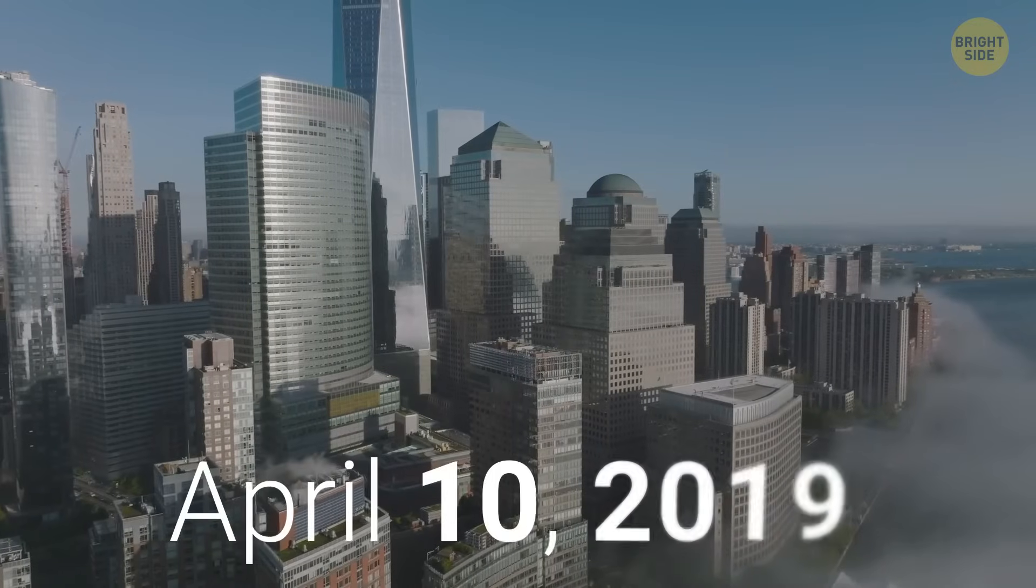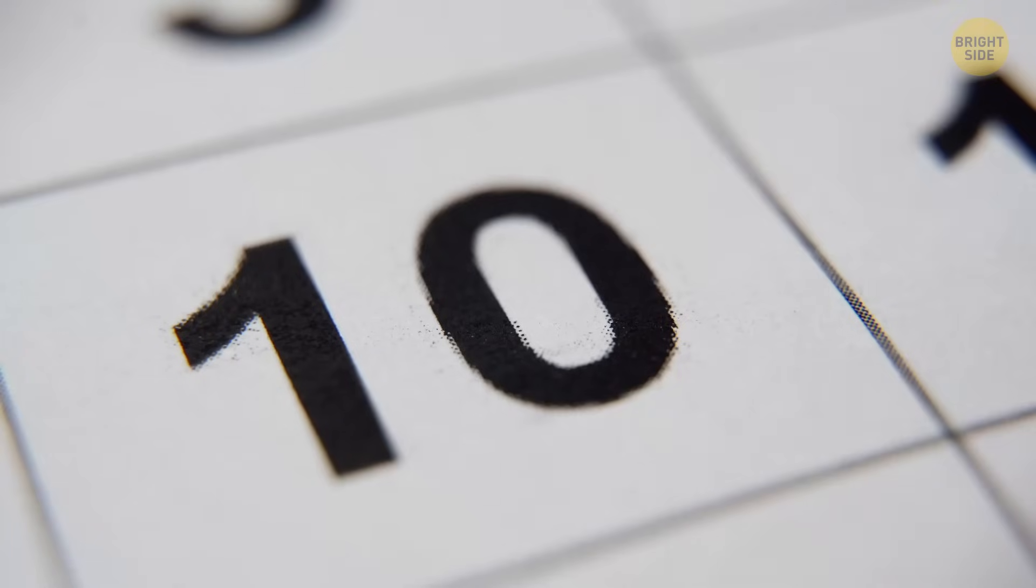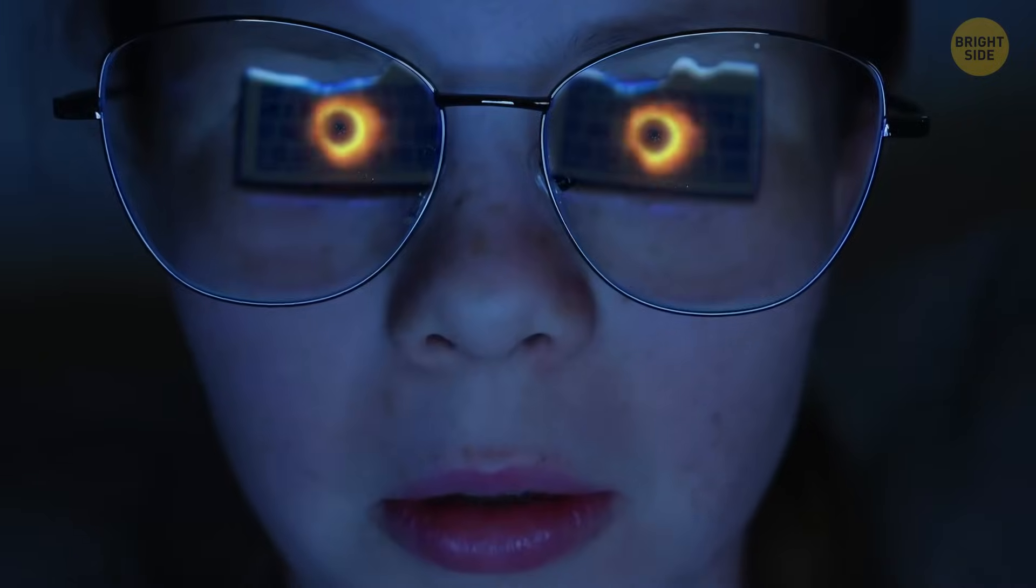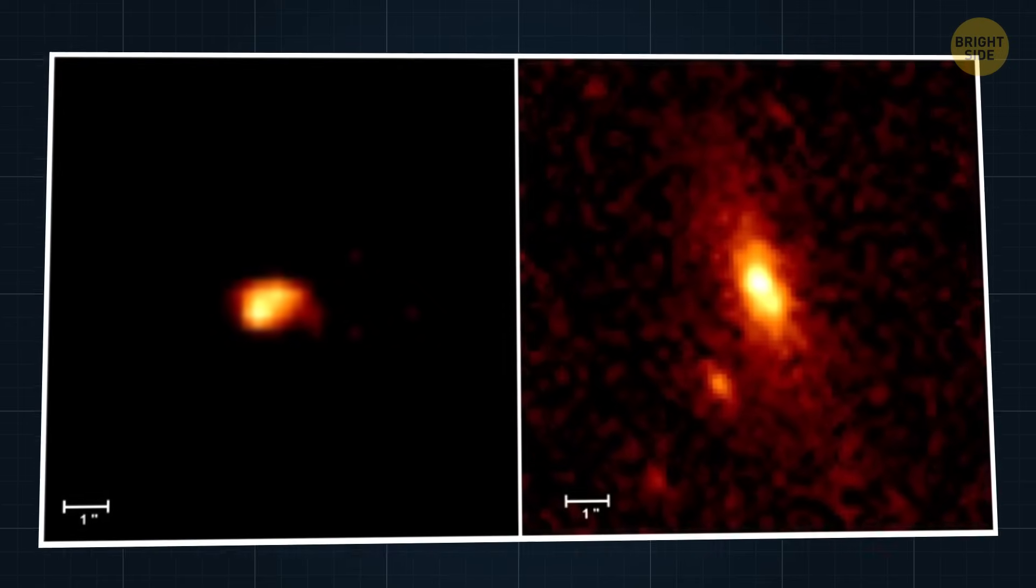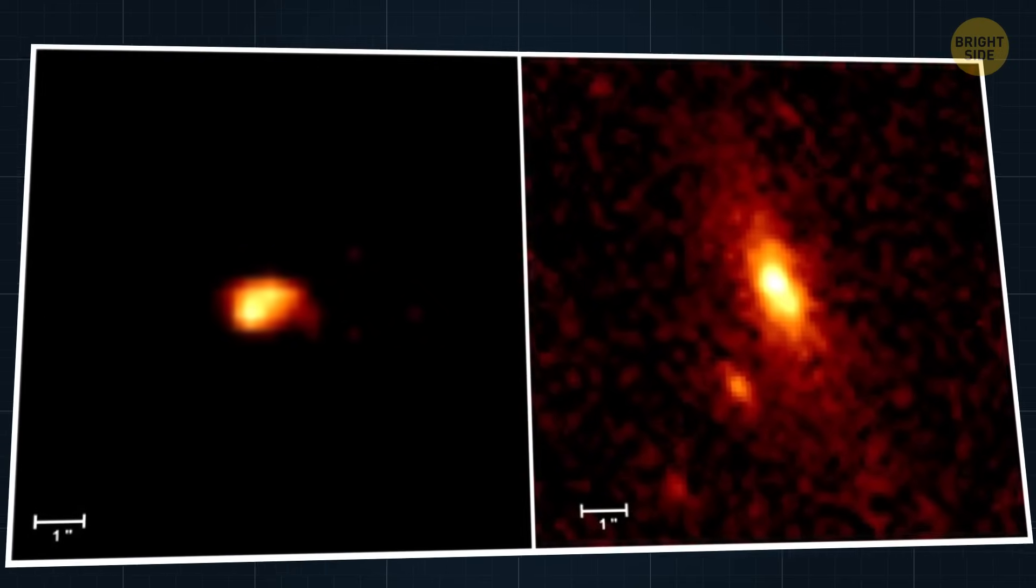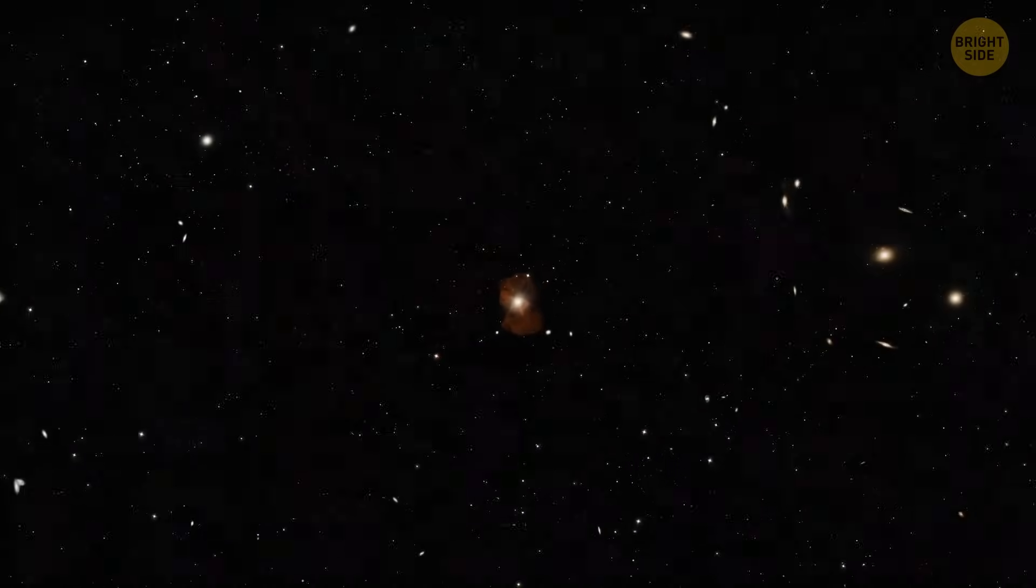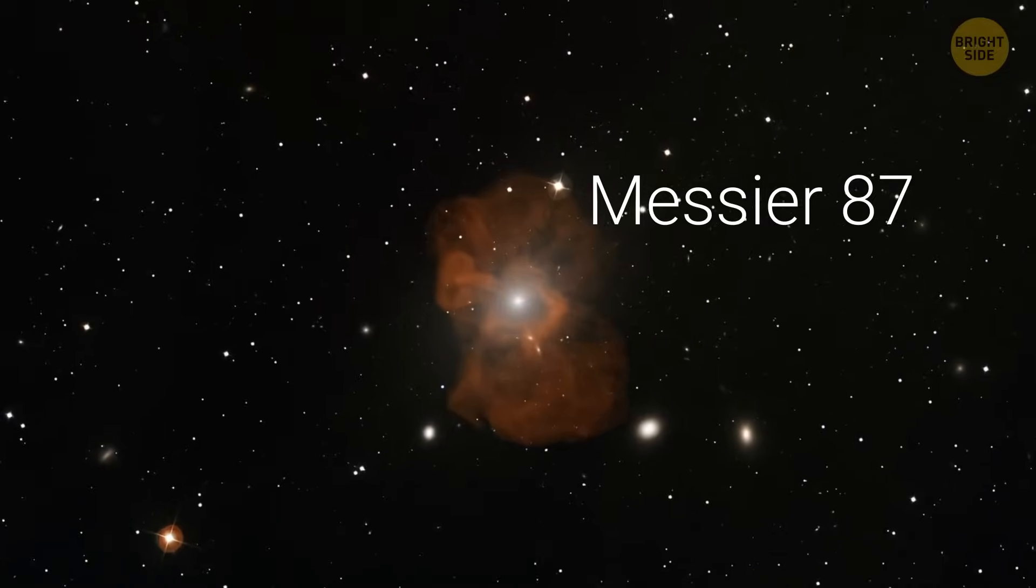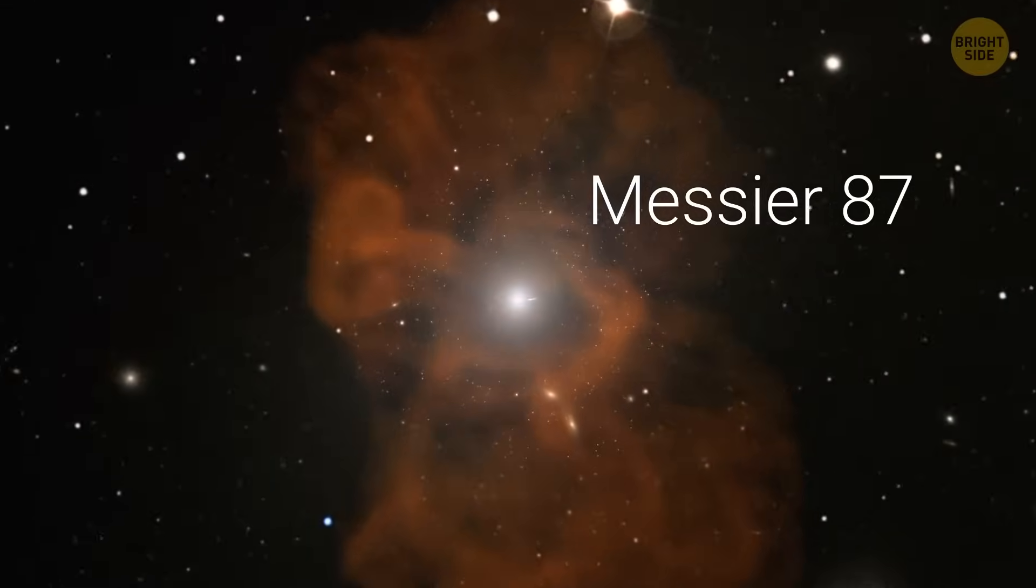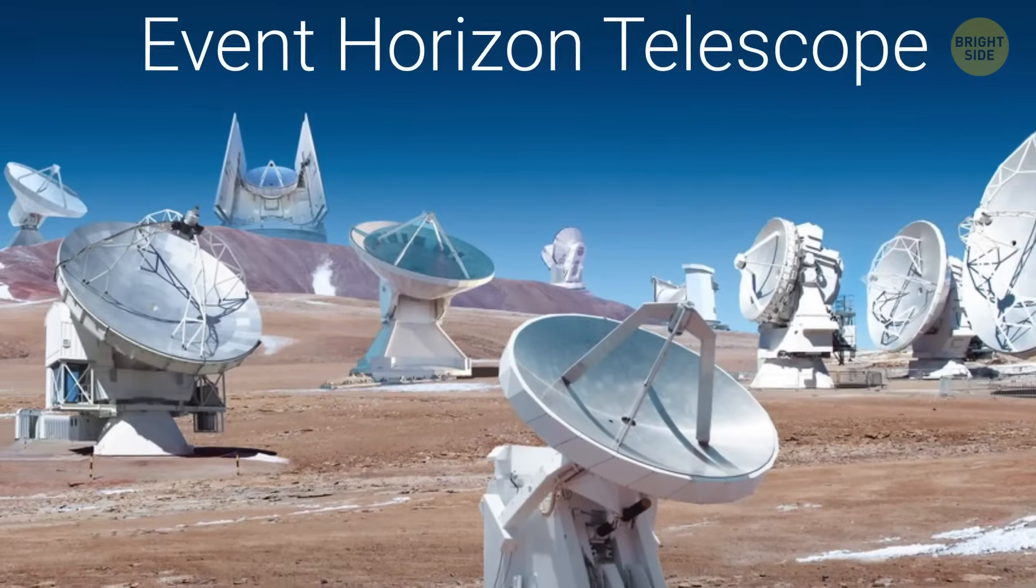So, it's April 10th, 2019. Mark that date. And a black hole literally breaks the internet. Yep, for the first time ever, we get an actual picture of a black hole. And it's not just any black hole. No, it's the monster hanging out at the center of galaxy Messier 87. The Event Horizon Telescope made it happen.